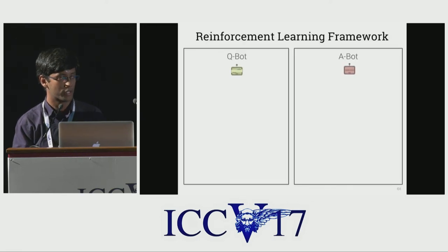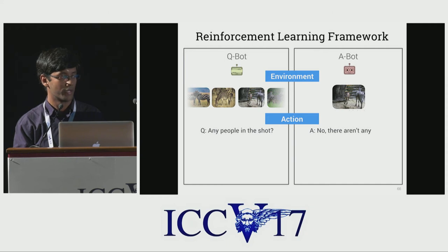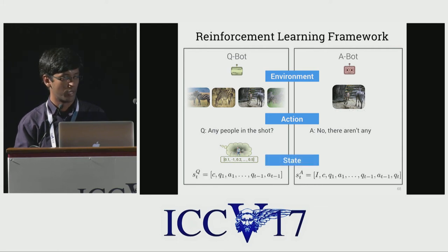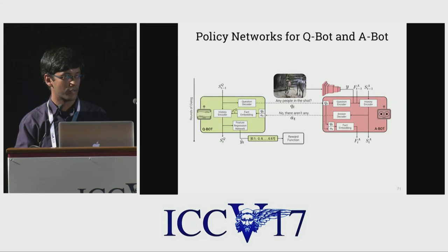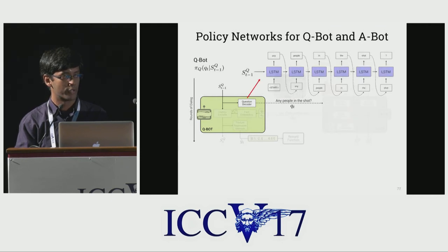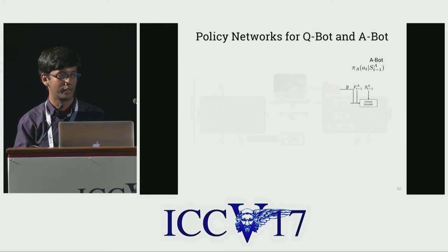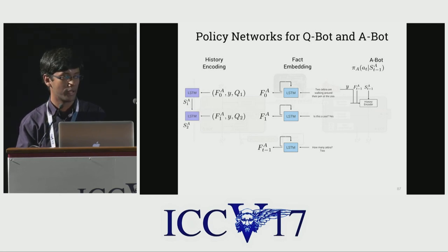The environment consists of a line-up of images over which Qbot makes a guess, and a secret image that Abot has access to. The action space for Qbot and Abot are the questions and answers they respectively generate at every round. Qbot additionally makes a prediction of the image feature vector conditioned on the dialogue. Abot encodes the image with a VGG16 convolutional neural network, the question with an LSTM, and has a hierarchical history encoder that at the lowest level independently encodes each round of dialogue history to generate fact representations, and at a higher level combines these to develop a unified representation of the dialogue history.